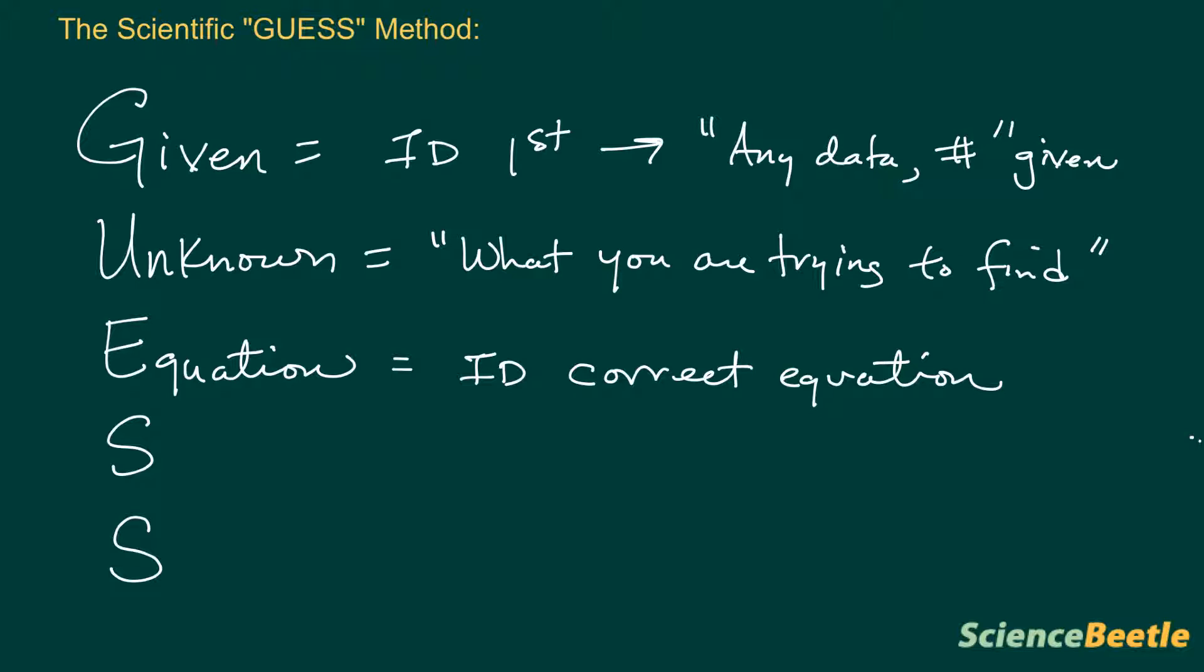In the particular problem that you're working on, it might tell you different types of variables. What you want to do is say, okay, I've got this variable and this other variable, so you go look for an equation that has both of those variables in the formula so that you can solve using some algebra for the unknown variable.